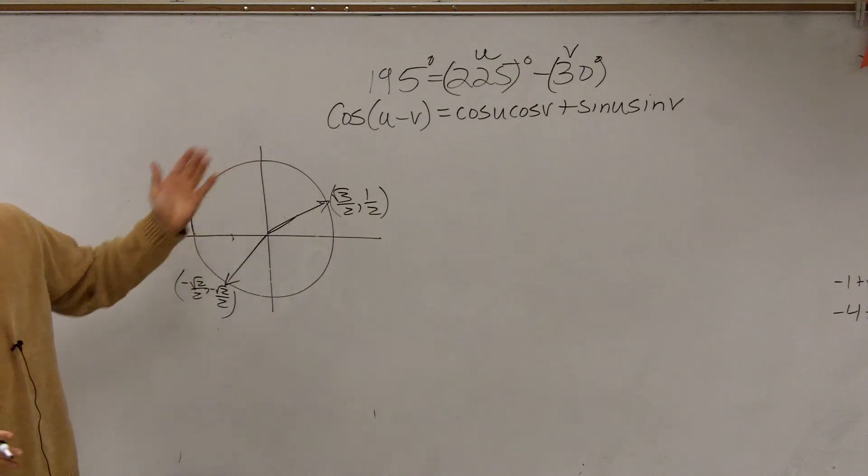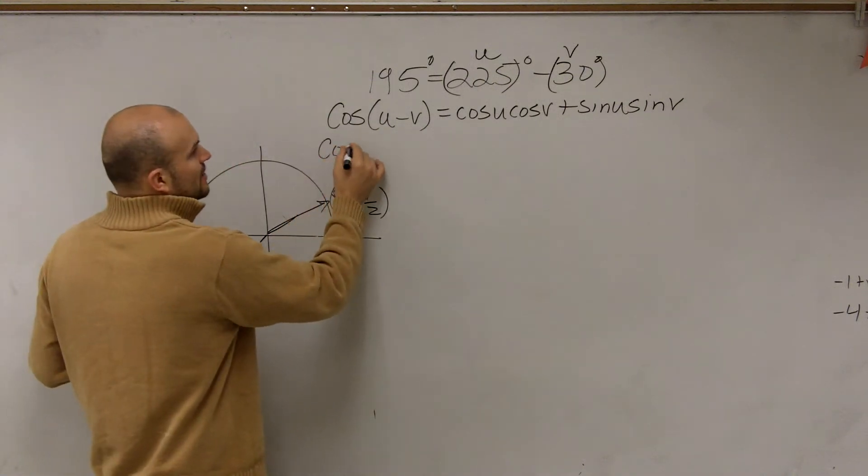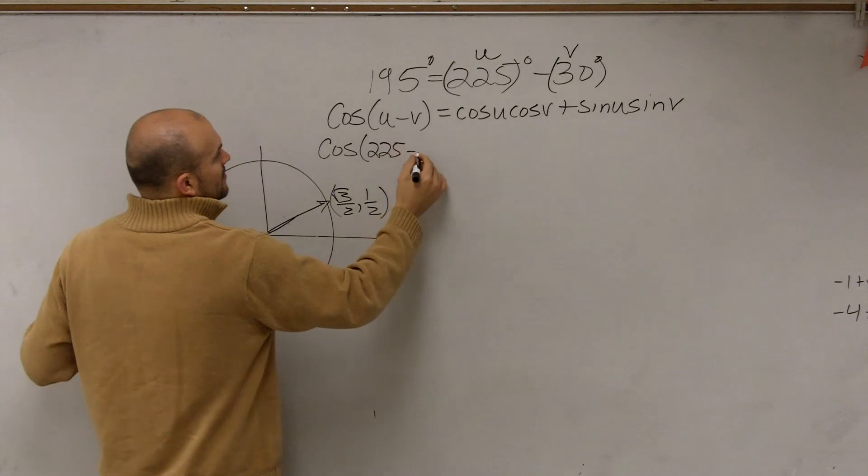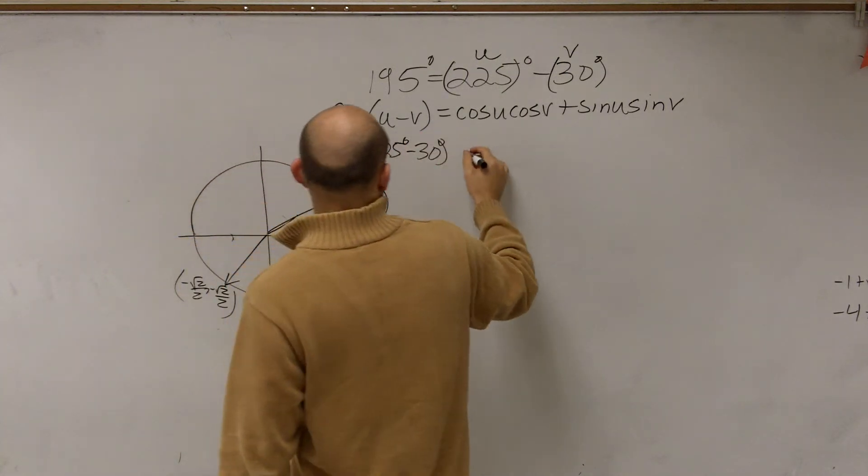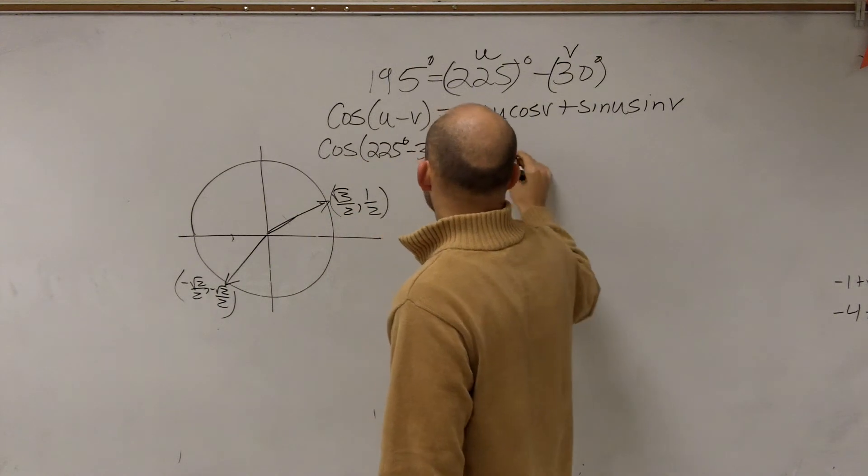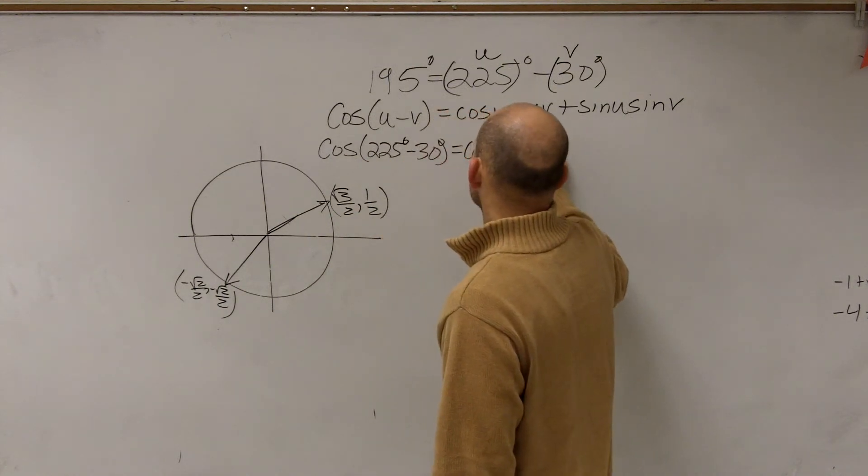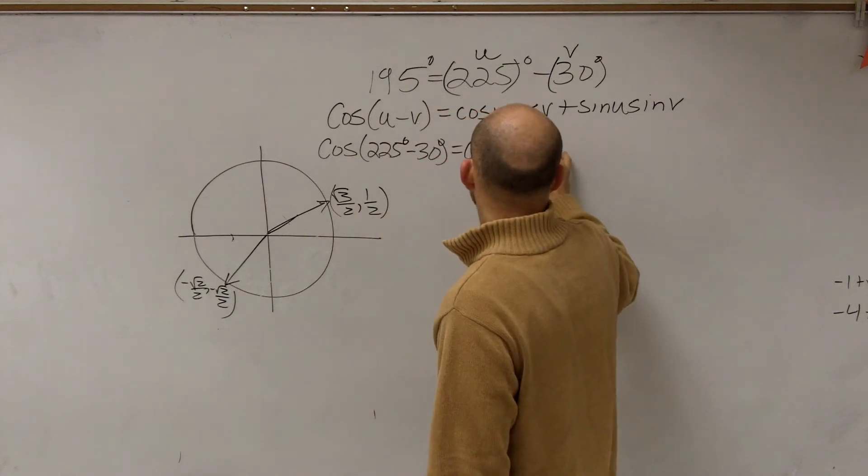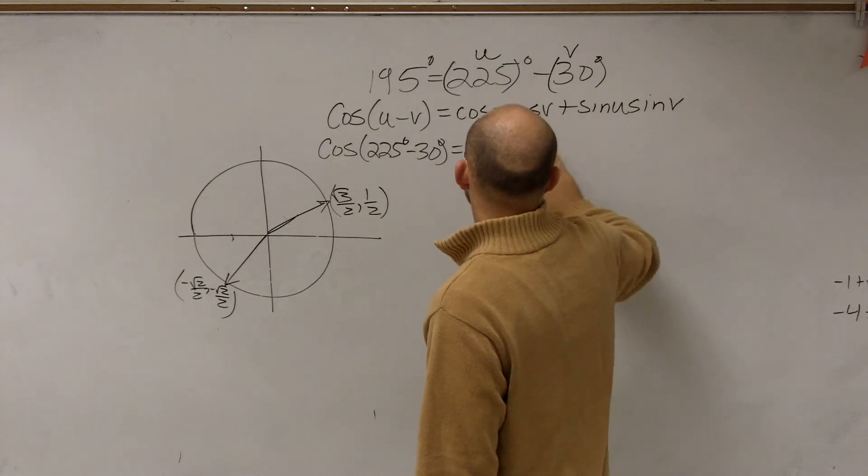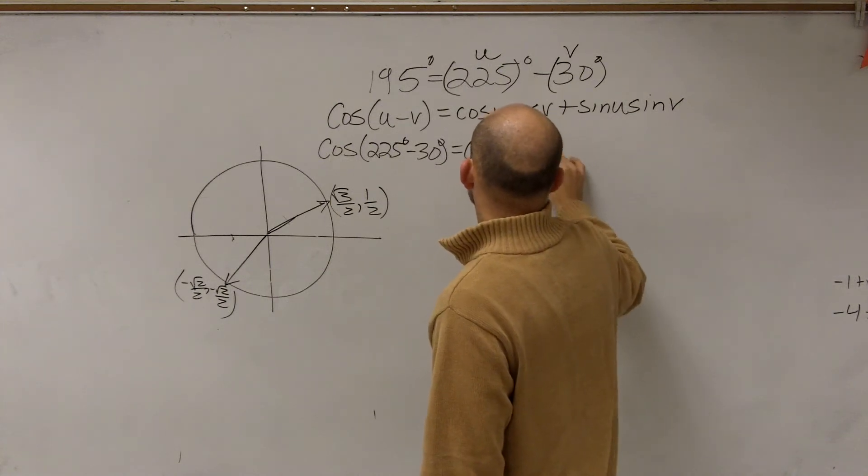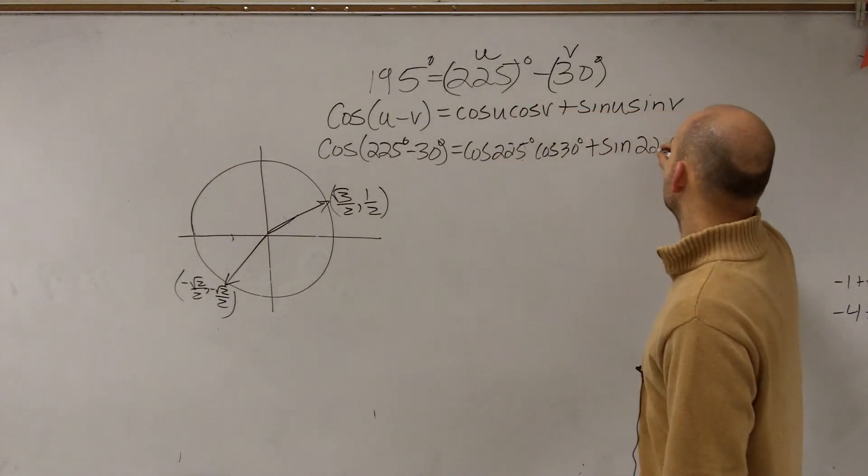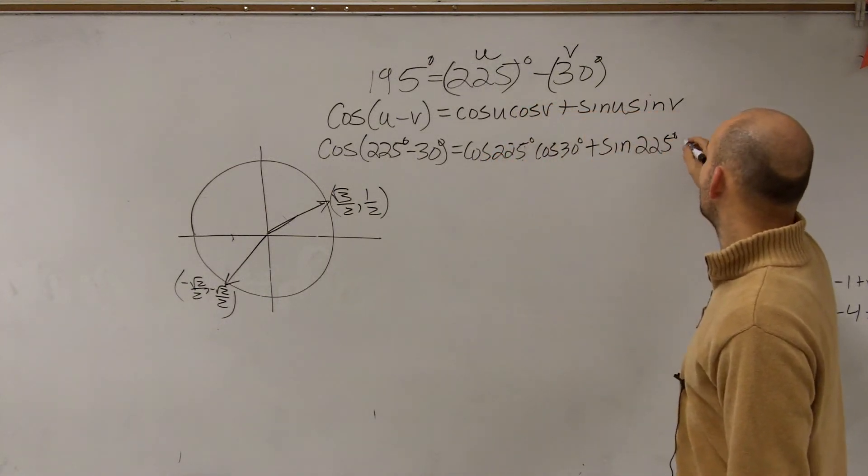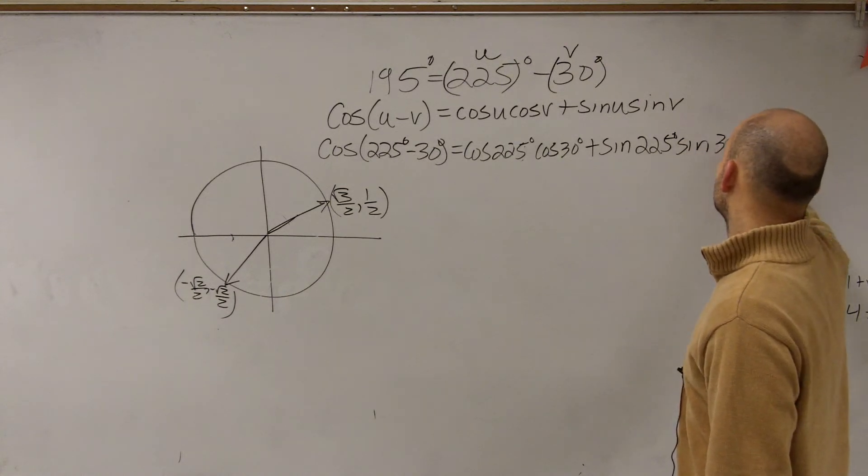So now all we're simply going to say is writing cosine of 225 minus 30 equals the cosine of 225 degrees times the cosine of 30 degrees plus the sine of 225 degrees times the sine of 30 degrees.